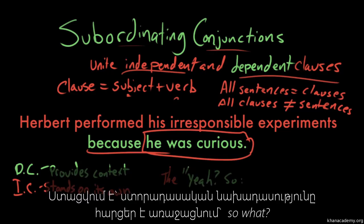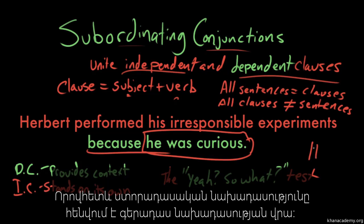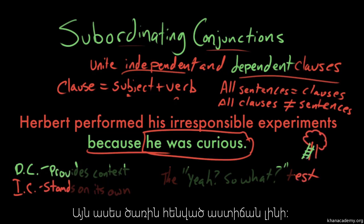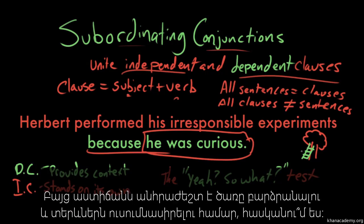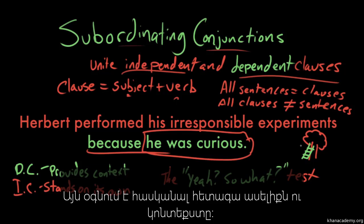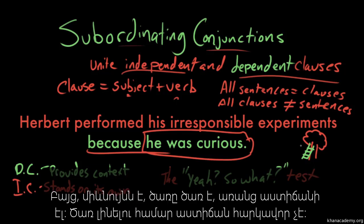A dependent clause should cause you to ask, yeah, so what? Because a dependent clause leans against an independent clause. It's like a ladder laid up against a tree. The tree is still going to be standing there whether or not the ladder is there. But the ladder is useful because it allows you to get up further into the tree and explore its leaves. It allows you to get further context and further understanding. But the tree is still a tree without the ladder — you don't have to have a ladder in order to be a tree.